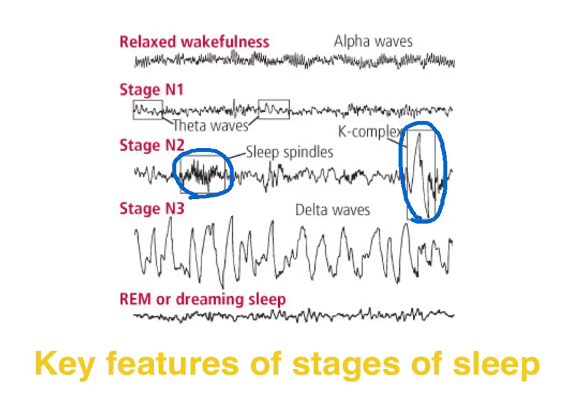Stages 3 and 4 of non-REM sleep are known as slow-wave sleep because of the exceptionally slow, low-frequency brain waves, indicating a lack of brain activity during this deep stage of sleep that is thought to be important for physiological restoration. You can check out the clip on the restorative theory of sleep for more on this.